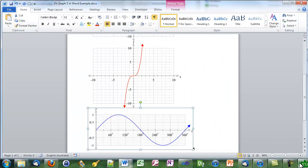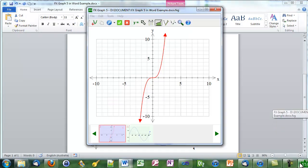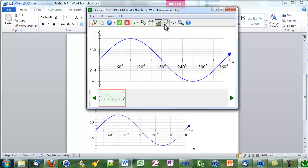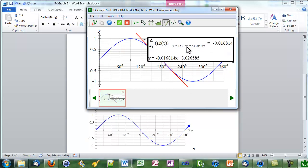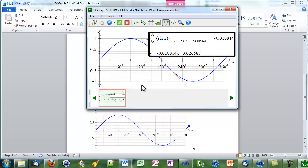To finish up, we'll copy the sine curve, go to FX Graph and it finds the right one. We'll add a secant line and an annotation. Push the green tick, and it's back in Word.